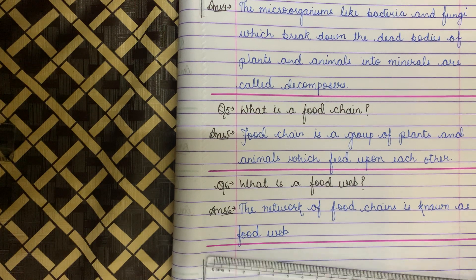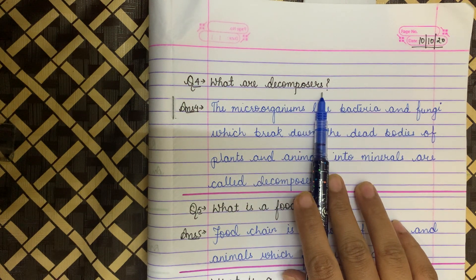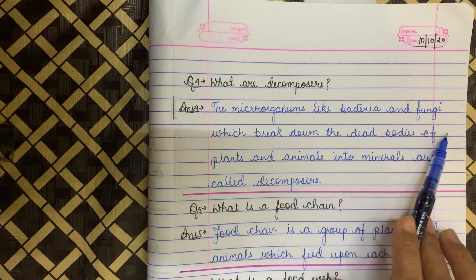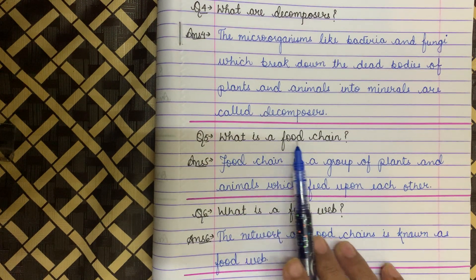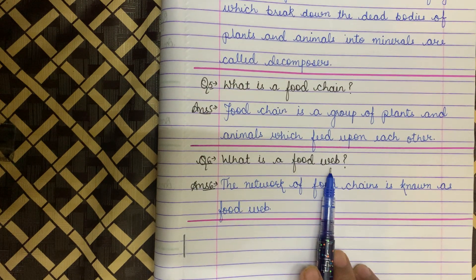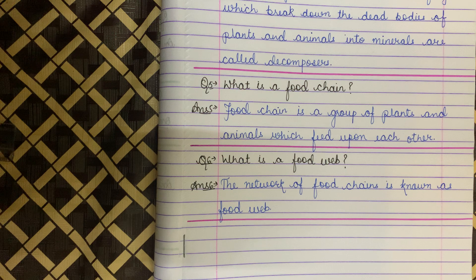So that's all for today children. We have done three question answers. What are decomposers? The microorganisms like bacteria and fungi which break down the dead bodies of plants and animals into minerals are called decomposers. What is a food chain? Food chain is a group of plants and animals which feed upon each other. What is a food web? The network of food chains is known as food web.